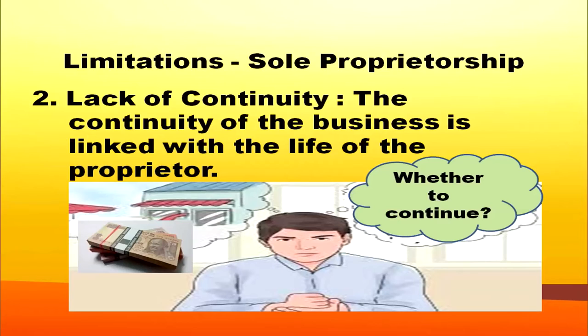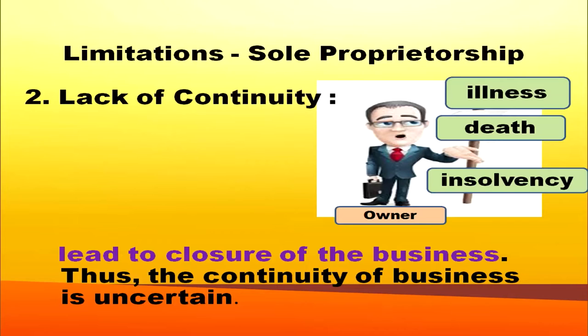Another limitation is lack of continuity. The continuity of a sole proprietorship form of organization is linked with the life and capacity of the proprietor to run the business. If the owner is not interested or if something happens to his life, such a form of business organization will come to an end. Illness, death or insolvency of the owner will lead to closure of the business. Thus, continuity of business is uncertain.